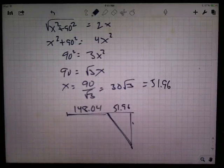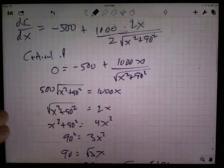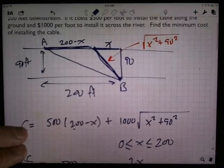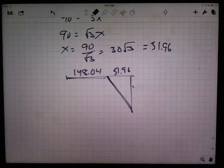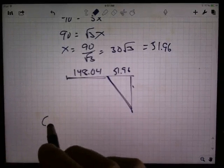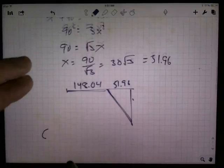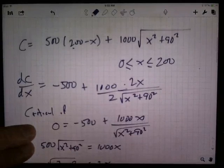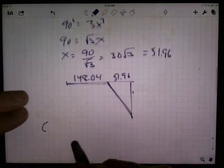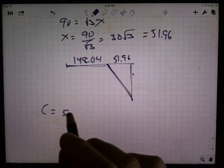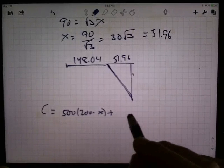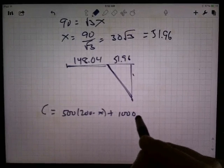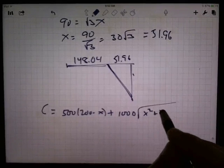Have I answered the question? Actually, I don't think so, because I think it asks for what is the minimum cost. Okay, well, let's do something here, because I haven't checked my endpoints yet. So, I'm going to figure out what's the cost. I'm going to write my cost function down again, just so I can remember what it is. So, the cost was 500 times 200 minus x, plus 1,000 times the square root of x squared plus 90 squared.